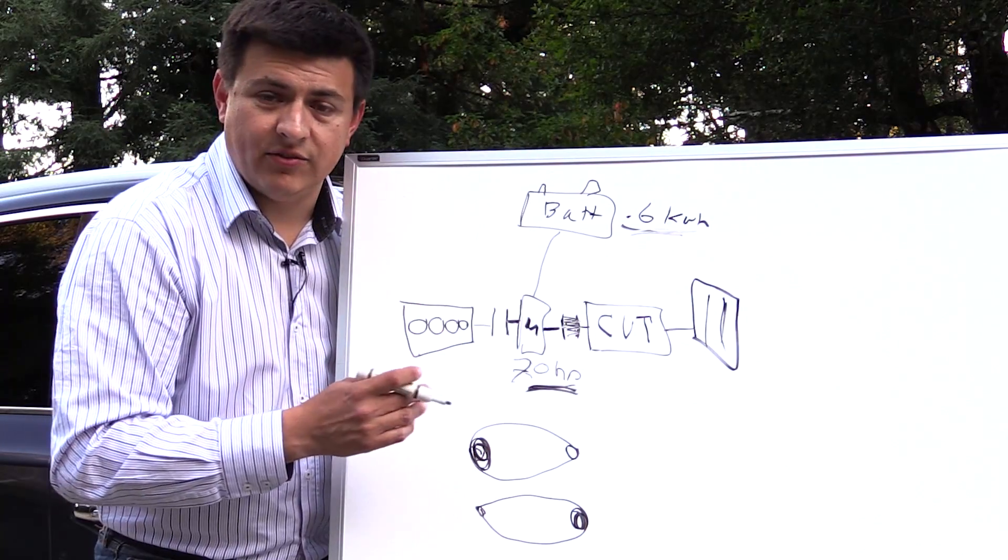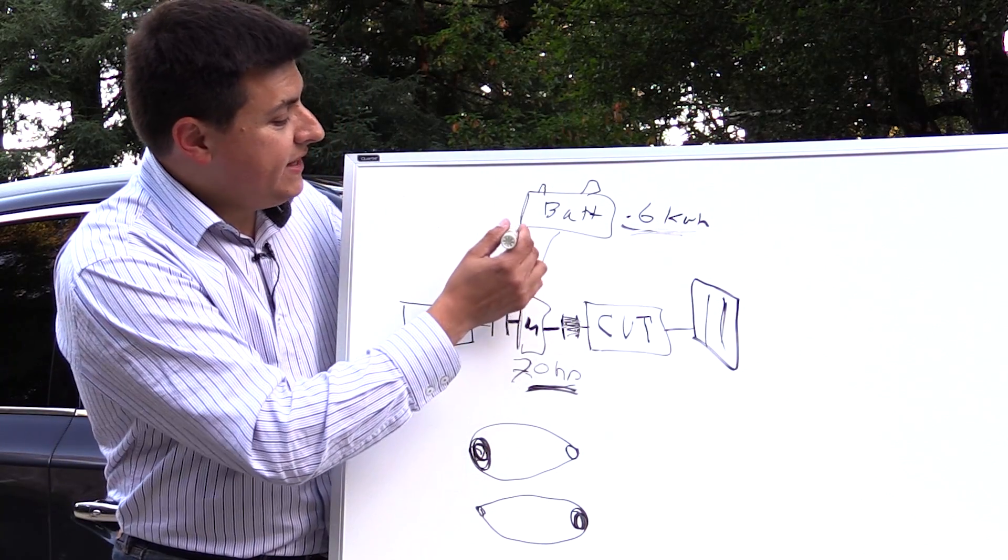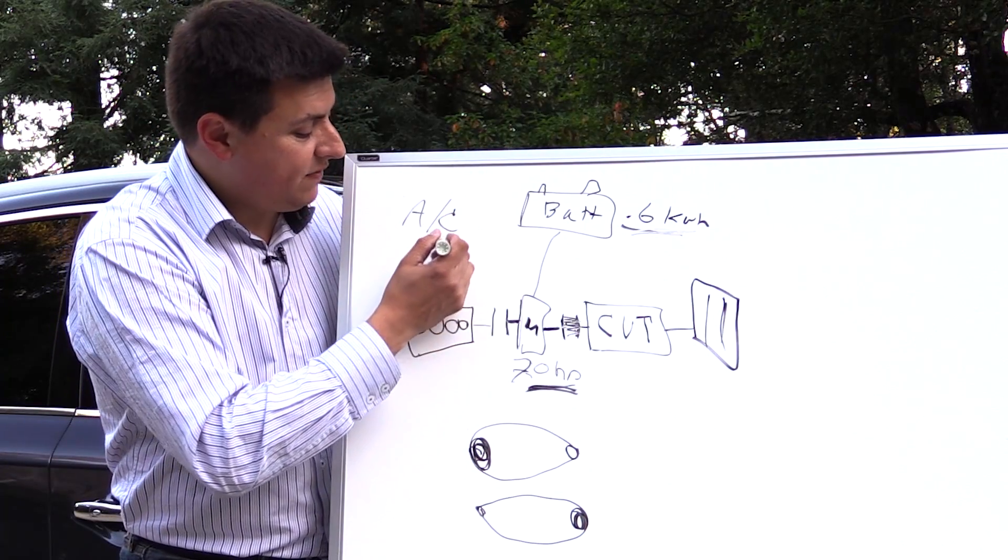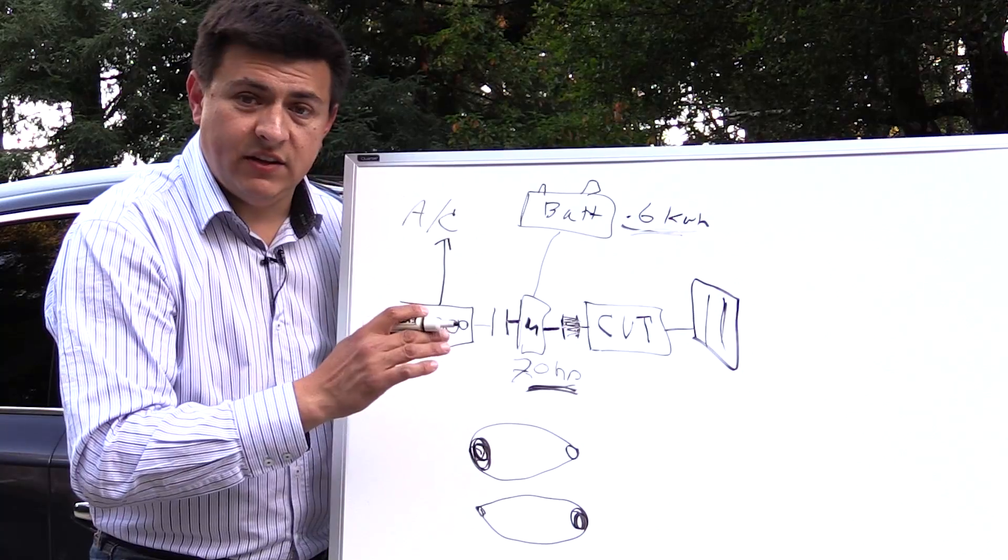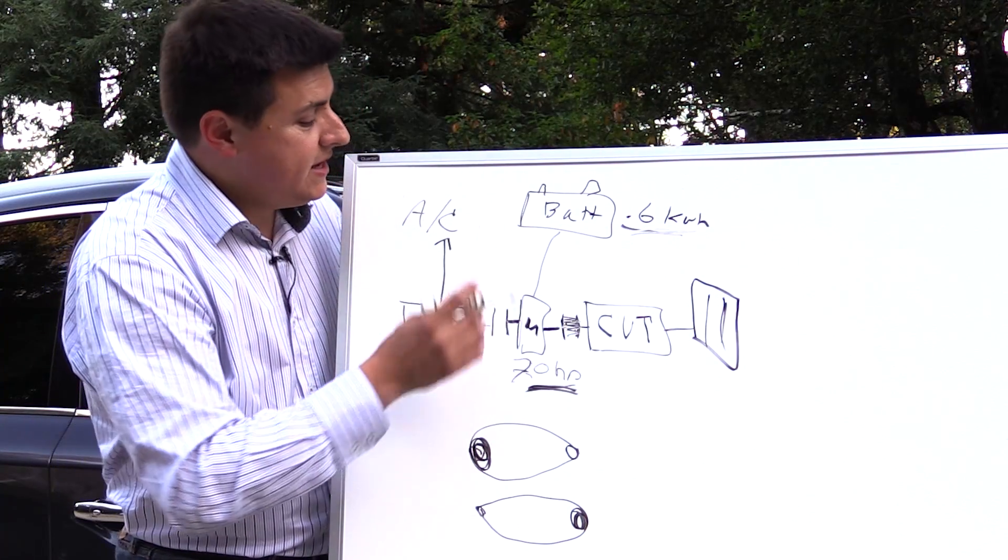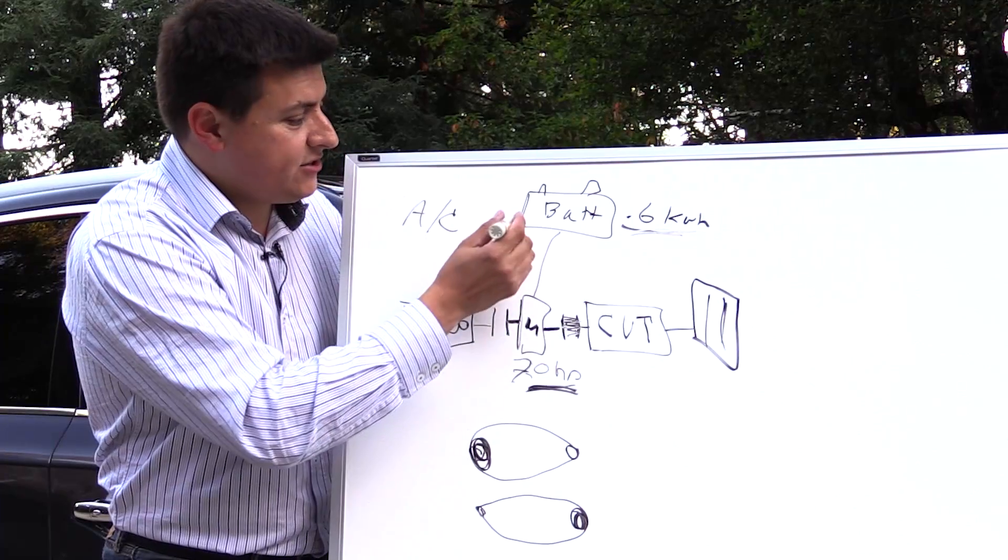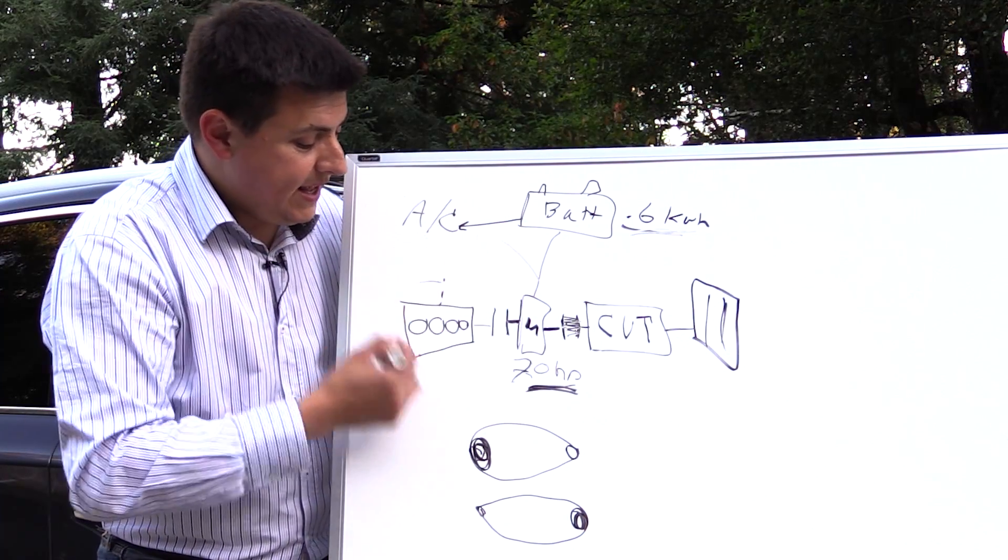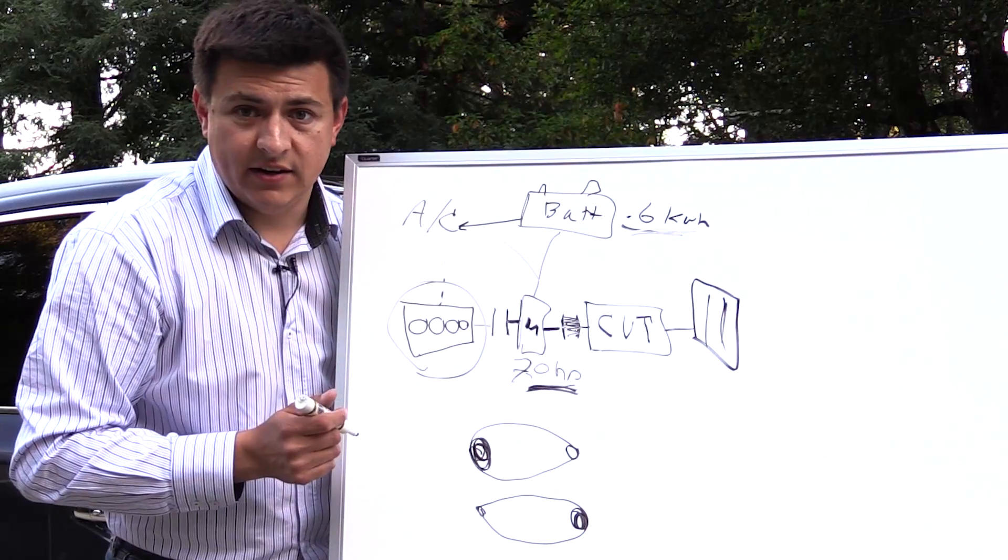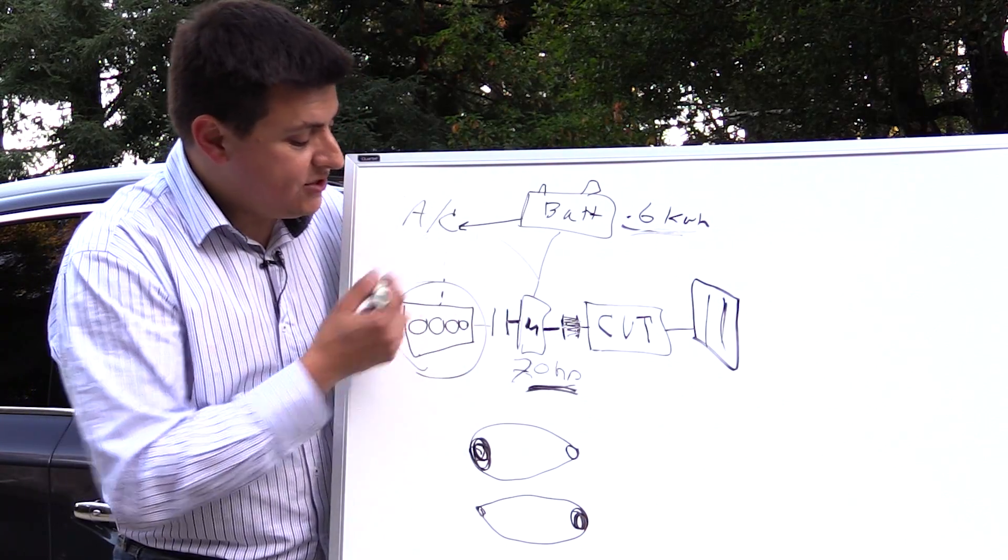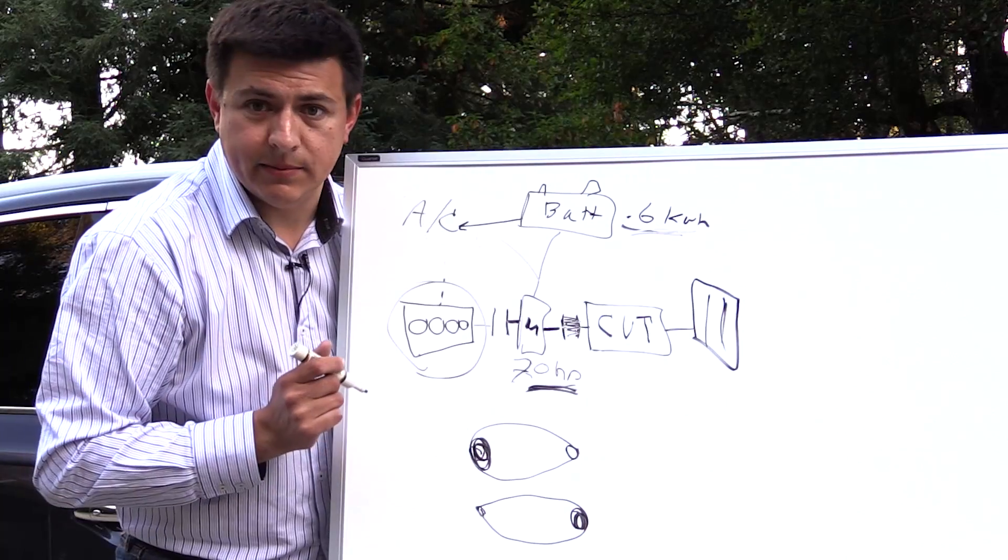Also limiting the electric range in the Pathfinder and the QX60 is the fact that the air conditioning is actually powered right off the engine and that's different than you'll find in the Prius, the Ford hybrids, or even the Q50 and Q70 sedans because in those the air conditioning is electrically powered off the battery and the generator which allows the engine to turn off even if you need air conditioning in the cabin. You can't do that in the QX60 or the Pathfinder. The engine does have to be running in order for the air conditioning to be running.